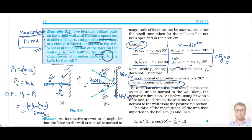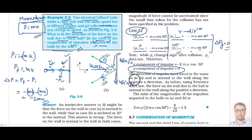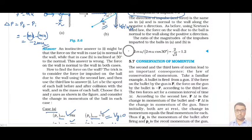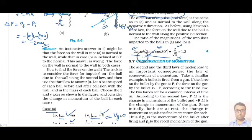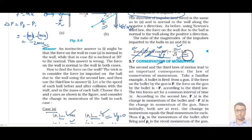For the second part — the ratio of the magnitude of impulse imparted to the balls by the wall — in the first case the impulse magnitude is 2mu and in the second case it is 2mu·cos30°. The ratio comes out to 2/√3, approximately 1.2, since mu cancels and cos30° = √3/2.